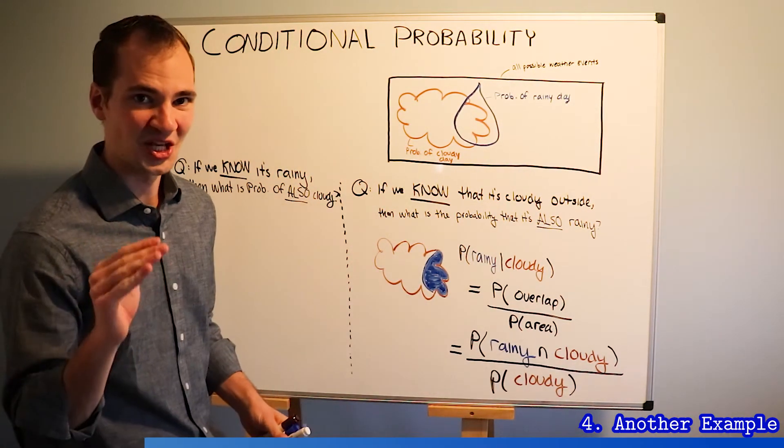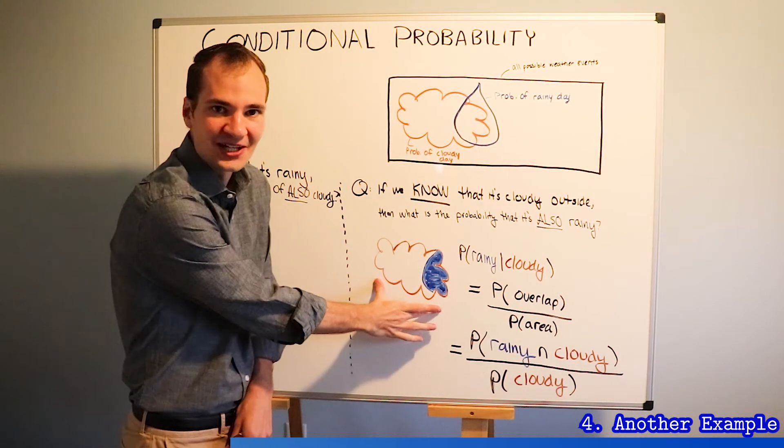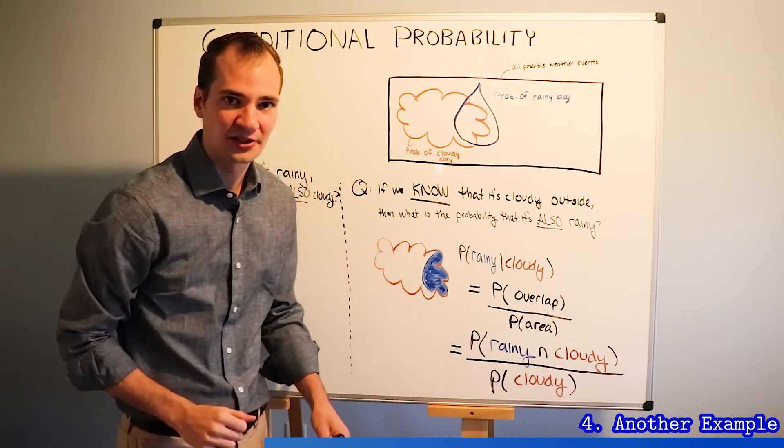We're going to do the same thing. We're going to look at the overlap between rainy and cloudy. But now instead of looking at the area from the cloud, we're going to look at the area from the raindrop.